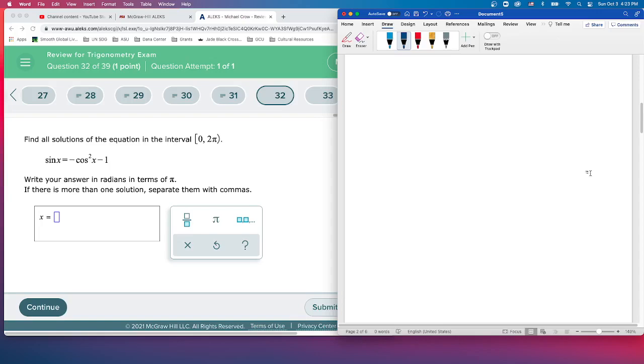We actually are going to have to use an identity. It's going to give us a quadratic equation. We're going to need to factor and then solve the quadratic, just kind of like what we did in 31, but 31 was already factored for us.